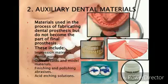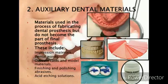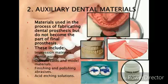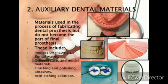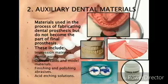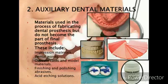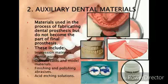Secondly, the auxiliary dental materials. These are substances used in the process of fabricating a dental prosthesis and appliances, but they do not become part of these devices. Examples include impression materials, impression waxes, gypsum cast and model materials, finishing and polishing abrasives, and acidage solutions. All these materials help in fabricating a dental prosthesis or appliance, but are not part of the final prosthesis.